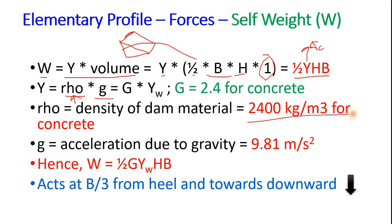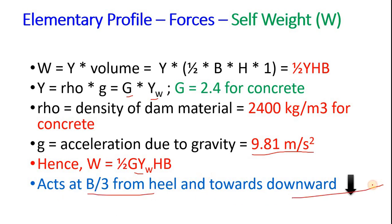Now in terms of water we can write G into gamma w. G is the specific gravity which is 2.4 for concrete and g 9.81 meter per square second. Hence we can say W is equals to 1 by 2, instead of gamma we can write G gamma w. So G gamma w hb and it acts at b by 3 from heel and downward.